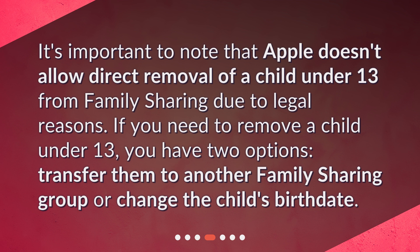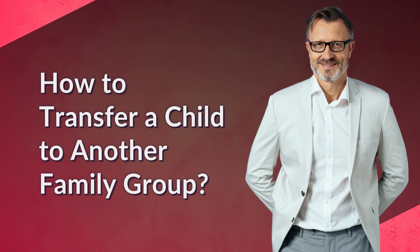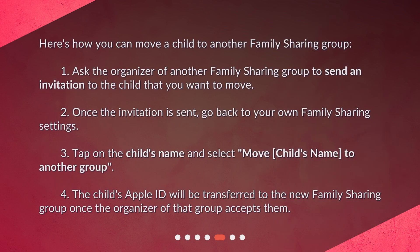Transfer them to another family sharing group, or change the child's birth date. How to transfer a child to another family group? Here's how you can move a child to another family sharing group: 1. Ask the organizer of another family sharing group to send an invitation to the child that you want to move. 2. Once the invitation is sent, go back to your own family sharing settings. 3. Tap on the child's name and select 'Move [child's name] to another group.' 4. The child's Apple ID will be transferred to the new family sharing group once the organizer of that group accepts them.